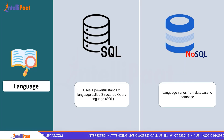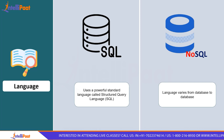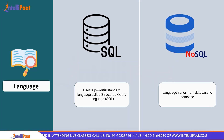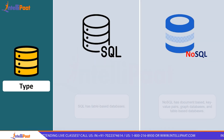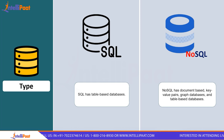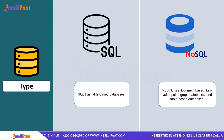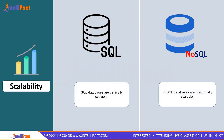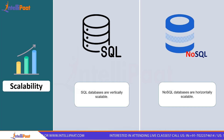On the basis of language, SQL uses a standard language called Structured Query Language, whereas NoSQL doesn't have any fixed language — it varies from database to database. On the basis of type, SQL has a table-based database, while NoSQL has document-based storage like key-value pairs, graph-based, and wide-column table-based databases. On the basis of scalability, SQL databases are vertically scalable, whereas NoSQL databases are horizontally scalable.